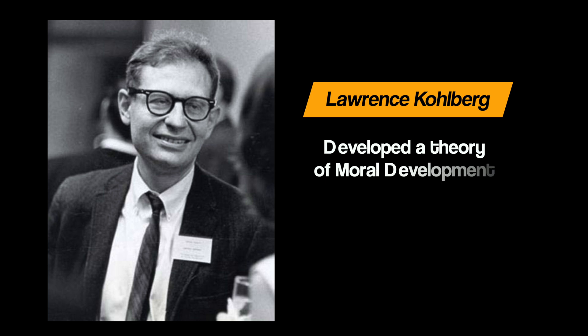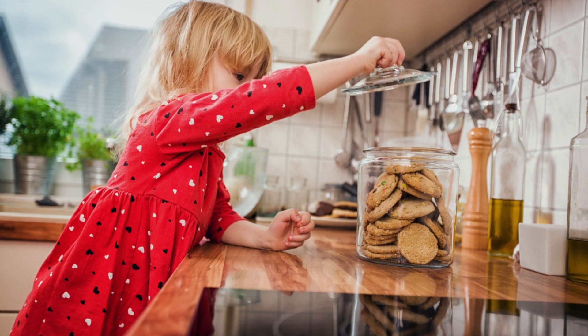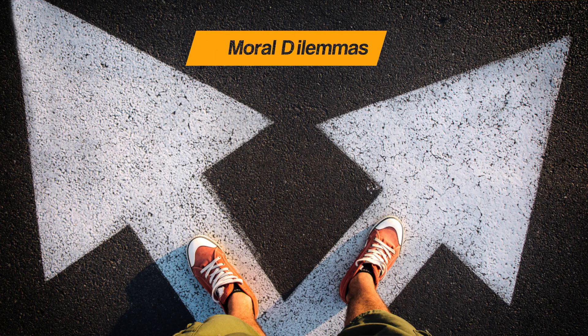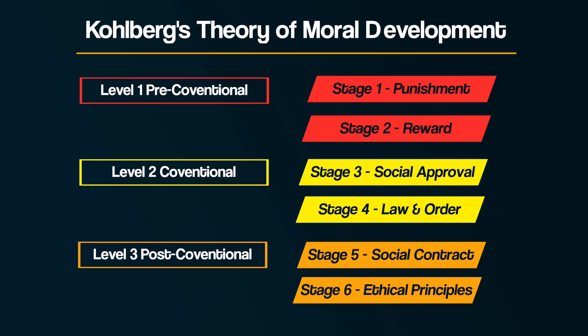Next, let's look at moral reasoning and how it links to offending behavior. Lawrence Kohlberg was a psychologist who produced a theory of moral development. He was interested in how a child's understanding of right and wrong develops over time. Kohlberg presented his participants with moral dilemmas and analyzed their responses to determine the stage of moral reasoning they were at. His theory has three levels, each divided into two stages, reflecting different reasons behind moral choices.